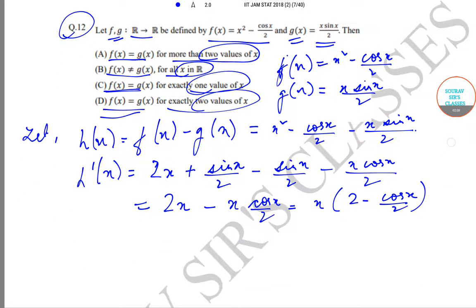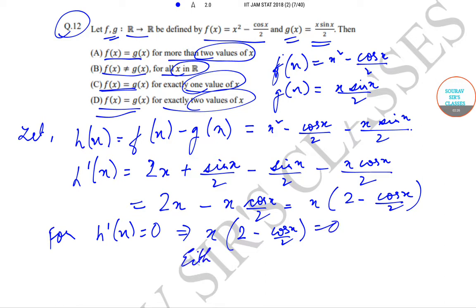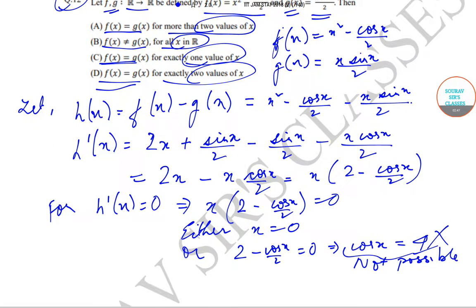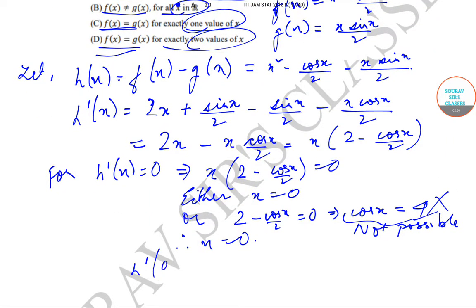For maxima and minima, setting h'(x) = 0 implies x·(2 - cos(x/2)) = 0. Therefore, either x = 0, or 2 - cos(x/2) = 0, which would imply cos(x) = 4. That is not possible since cos(x) lies between -1 and 1. So the only option is x = 0, meaning x = 0 is the only root of h'(x) = 0.